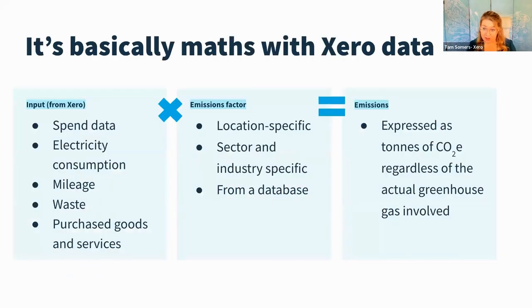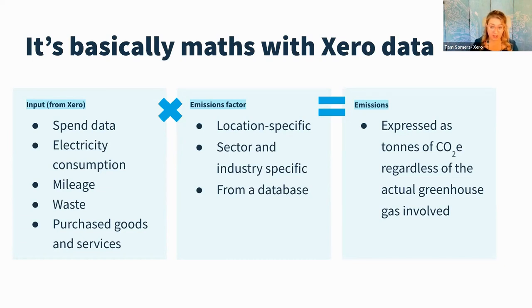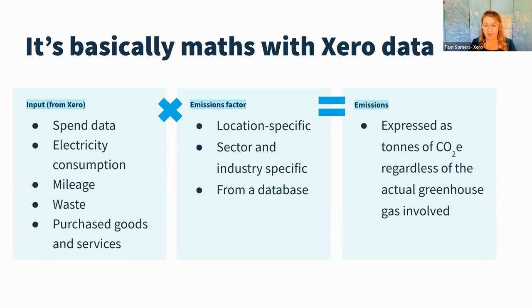It's basically maths using Xero data — that's how I'd explain it. A lot of the inputs are things you already have available. You multiply those by an emissions factor, which Jess will explain. That gives you a carbon footprint expressed as tonnes of carbon dioxide equivalent, regardless of the actual greenhouse gases involved — so it might be methane from cows, but we express the whole carbon footprint as tonnes of CO2 equivalent emitted. Someone who's a super expert in this area is Jess Richmond, CEO and founder of Someday, a fabulous Australian company we're really excited to work with globally.